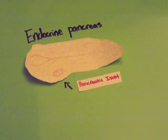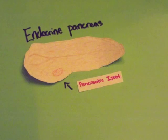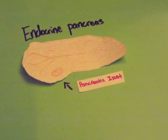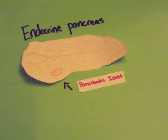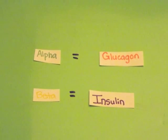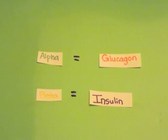A small portion of the pancreas secretes hormones as part of the endocrine system. Pancreatic islets, or the islets of Langerhans, are the endocrine clusters found among the exocrine cells of the pancreas. Here, alpha cells produce glucagon and beta cells secrete insulin.